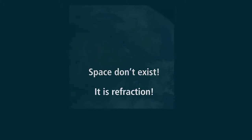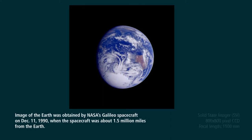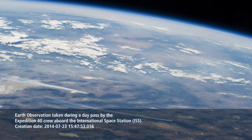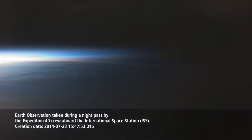Back here in the real world of thinking, rational people, we have this image of the curvature taken from the Galileo spacecraft in 1992, and a beautiful picture of the entire earth taken from Galileo at an altitude of 1.5 million miles in 1990. This image was taken from the ISS in 2014 using a Nikon D3s with an 80mm lens, and this one using the same camera with an 85mm focal length.